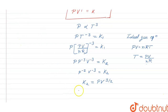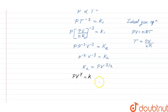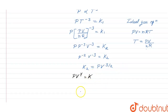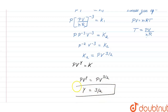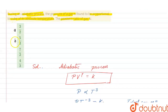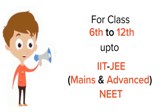Looking back at the adiabatic process expression PVγ = k, and comparing it with PV^(3/2) = k2, we can see that all constants are equal and therefore γ, the Poisson's ratio, equals 3/2. So the value of Poisson's ratio comes out to be 3/2, and option A is the correct answer.